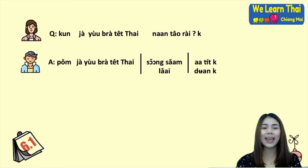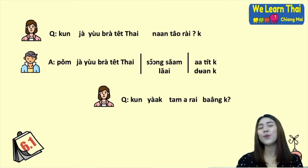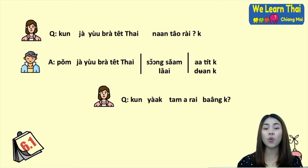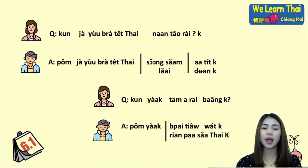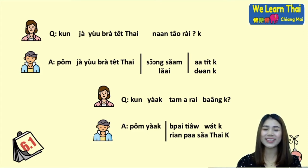Or you can say: ผมจะอยู่ประเทศไทยหลายเดือนครับ — 'I will live in Thailand for many months.' When your friend is staying in Thailand and you want to know what they want to do, you can ask: คุณอยากทำอะไรบ้าง? — 'What do you want to do?' The answer could be: ผมอยากไปเที่ยววัดครับ — 'I want to go to the temple,' or ผมอยากเรียนภาษาไทยครับ — 'I want to study Thai.'